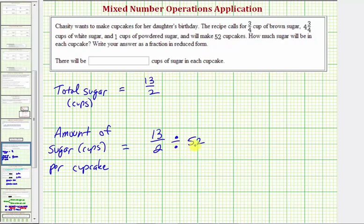Thirteen-halves divided by fifty-two, or if we write fifty-two over one, is equivalent to thirteen-halves times the reciprocal of one over fifty-two.